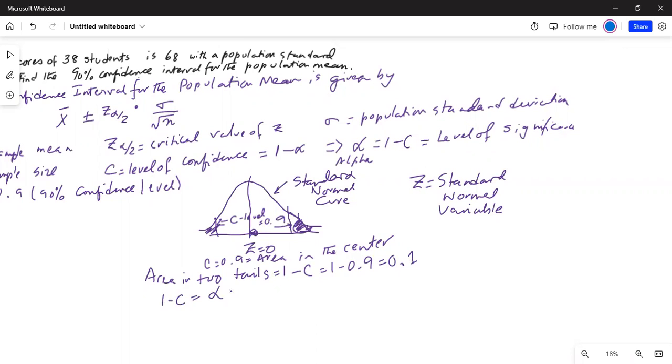In this problem, alpha is equal to 0.1. Because of symmetry, area of each tail is half of total alpha, alpha by 2. So if alpha is 0.1, alpha by 2 is 0.1 divided by 2 is 0.05.